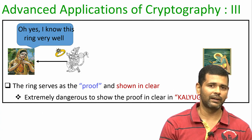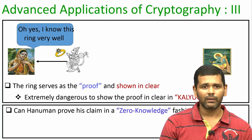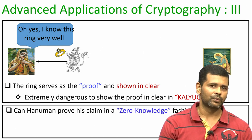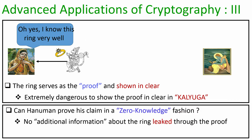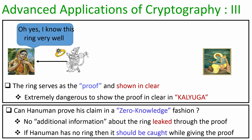More importantly, if Hanuman does not possess the ring then while giving the proof he should be caught and rejected. A zero-knowledge proof system ensures a prover can prove a statement without revealing anything about the proof. In the context of cryptography, imagine Alice has picked two large random prime numbers P and Q of say 512 bits each, she multiplies them to obtain N, and makes a claim to Bob that she knows the prime factors of N. Bob says he can verify the claim if she shows him the factors. But a zero-knowledge protocol will allow Alice to convince Bob that she knows P and Q without actually showing P and Q.